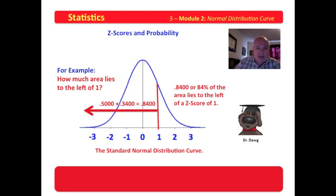Eighty-four percent of the area lies to the left of a z-score equal to one. The probability that a data lies to the left of one is 84 percent. That means if we randomly select data, there's an 84 percent possibility it will lie in this area, and a 16 percent possibility it will lie in this area. I got 16 percent by taking the whole area of one and subtracting 0.84, getting 0.16, which is 16 percent.